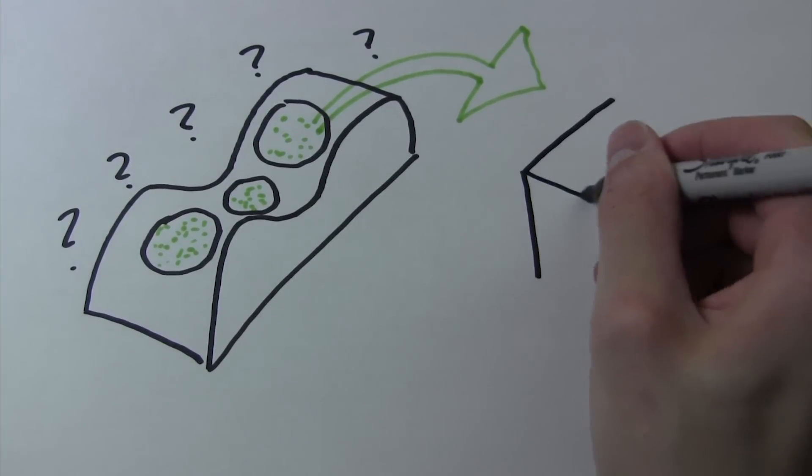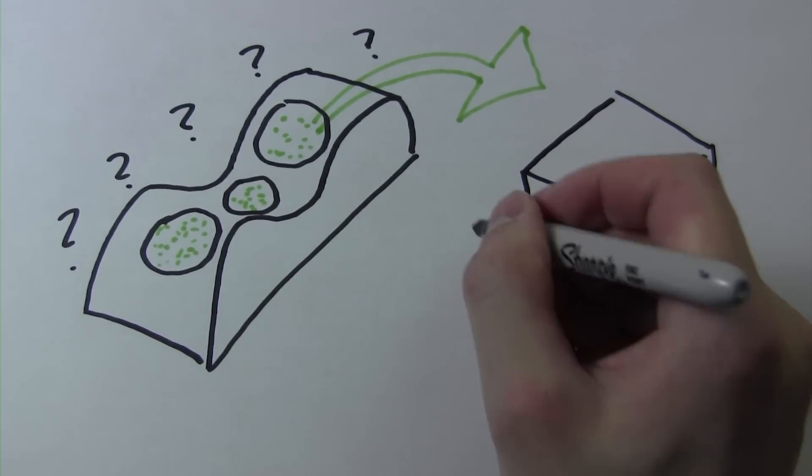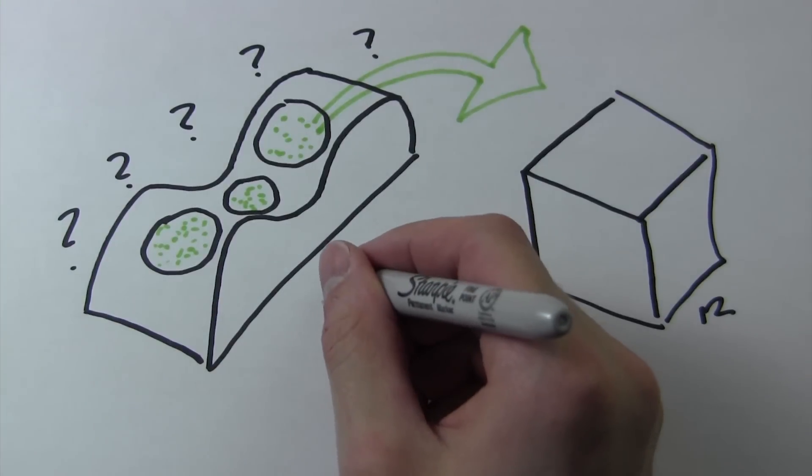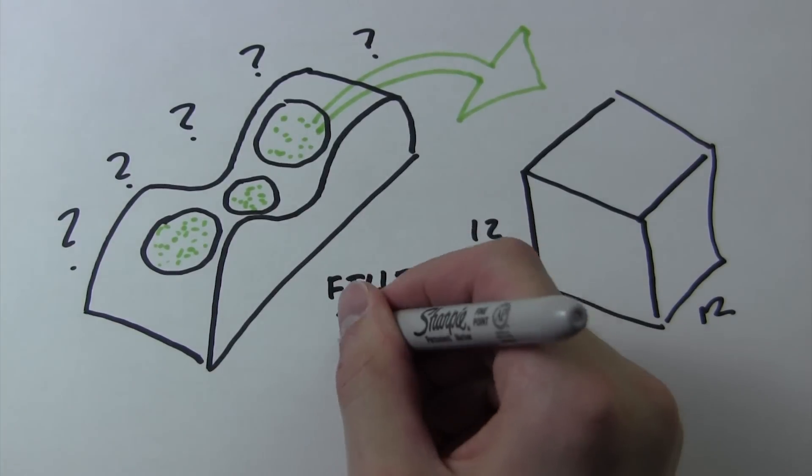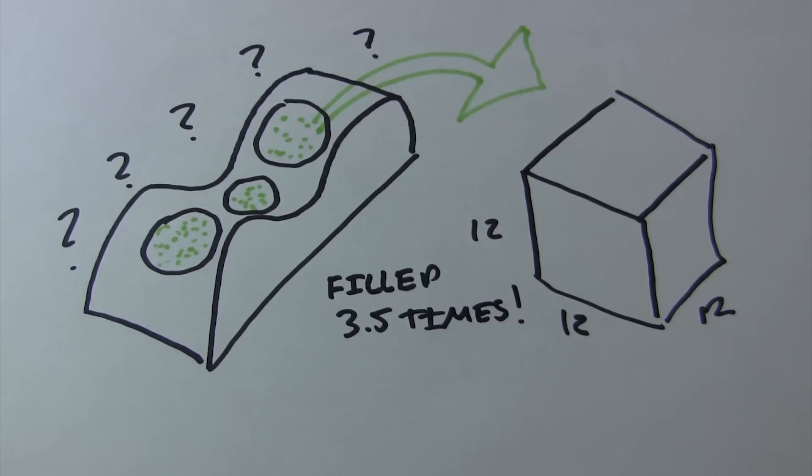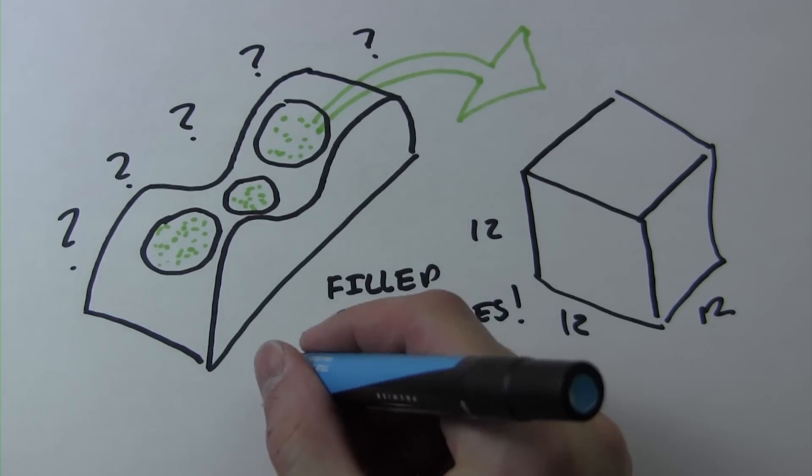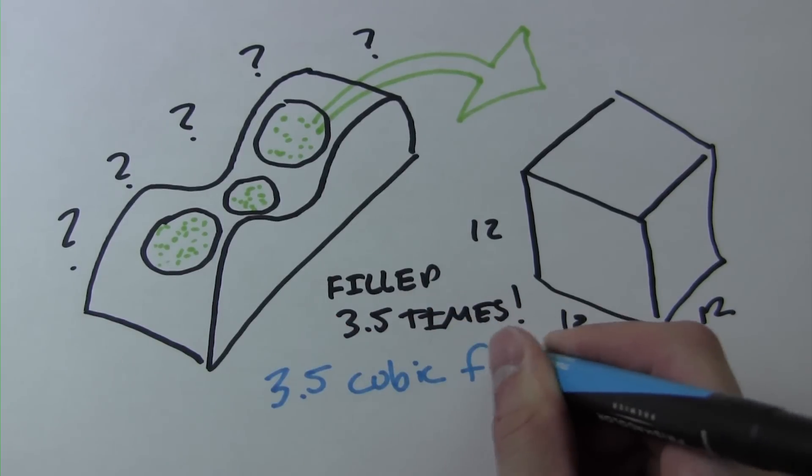Preferably a 12 inch by 12 inch by 12 inch box, which is equal to 1 cubic foot. We then know that if we fill our 1 cubic foot enclosure 3 and a half times, we have 3 and a half cubic feet in our unknown enclosure volume.